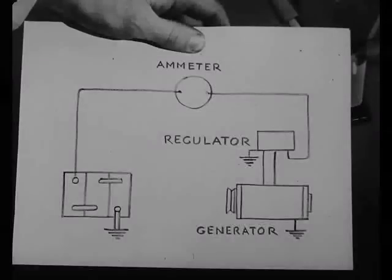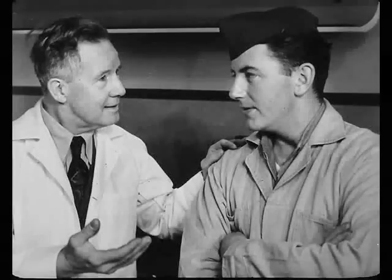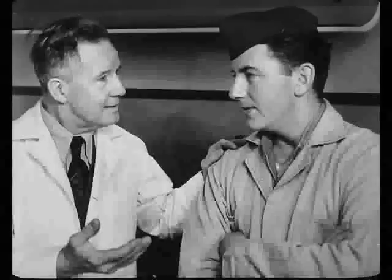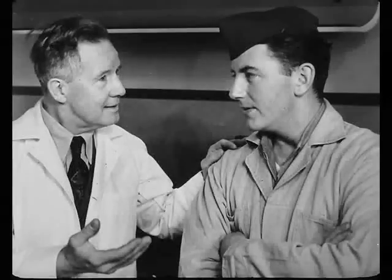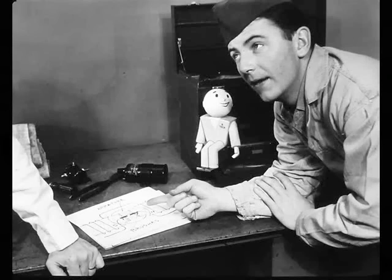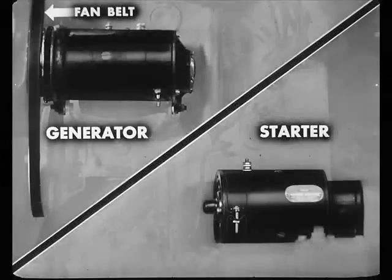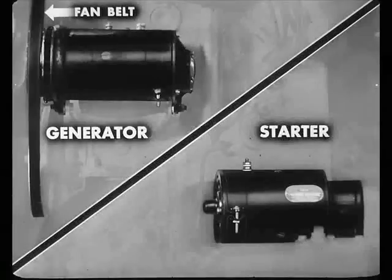We could regulate the current either by controlling the speed at which the armature rotates or by changing the strength of the magnetic field. So instead of varying the speed of the armature, we use a generator regulator to raise or lower the amount of current passing through the field coils. The regulator keeps the generator from overcharging the battery or generating so much current that it burns itself out. Both the starter and the generator have field coils to set up a magnetic field and an armature which rotates within that field. In the case of the generator, we drive the armature by the fan belt; in the case of the starter, the armature is turned by the magnetic forces developed within the starter itself.